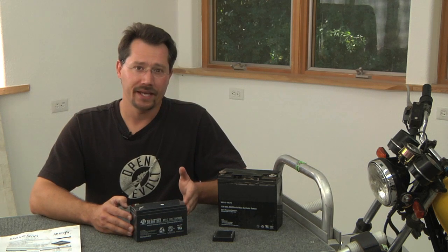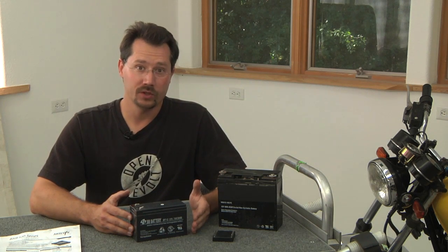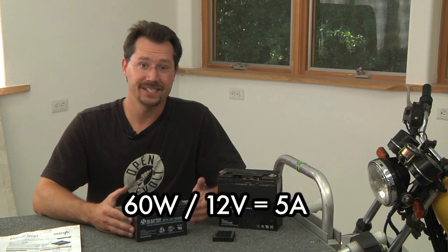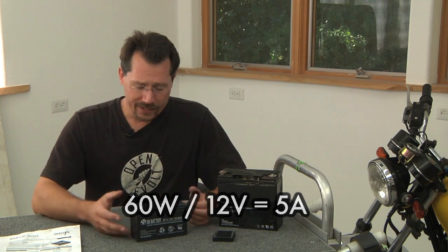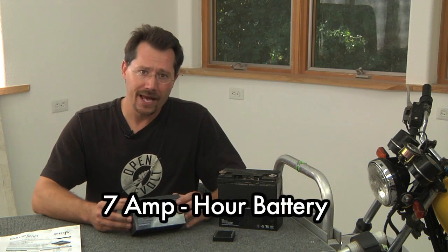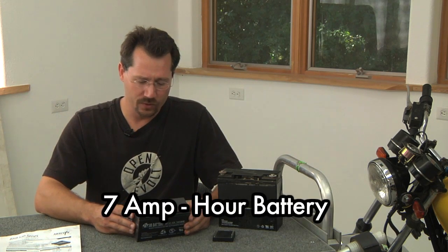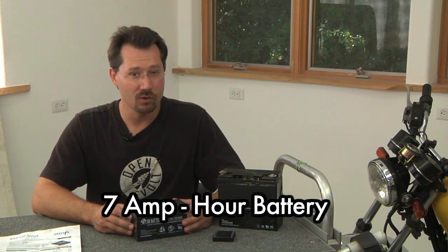If you're running a 60-watt bulb, you can divide that by the 12-volt system to get how many amps it's going to be drawing, which is going to be 5 amps. Now if you've got a 7 amp hour battery, that's going to be able to run 5 amps for just over an hour.